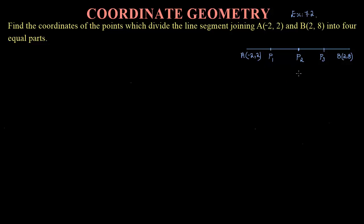But better than that, I can use the midpoint formula also. You can use the section formula or the midpoint formula — either one. In this video, I will teach you this problem using the midpoint formula. You can observe that P2 is the midpoint of A and B. We divided this line into equal halves, then divided each half again into equal halves. So P2 is the midpoint of A and B.